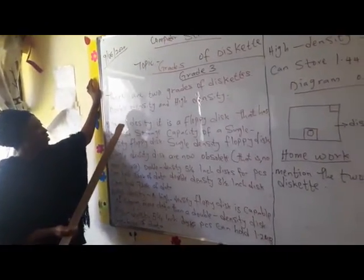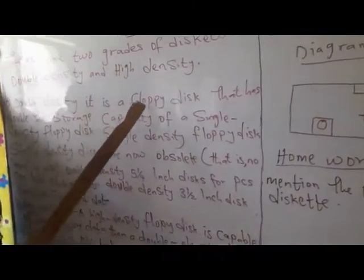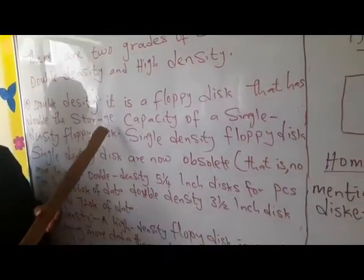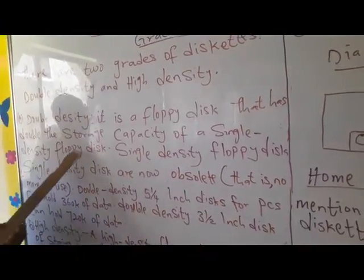Double density, it is a floppy disk that has double the storage capacity of a single density floppy disk.